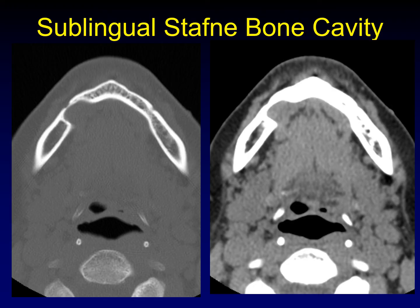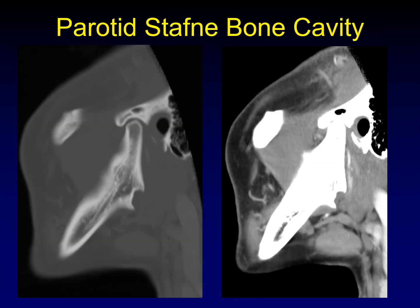Other salivary glands can produce similar defects, although they are much less common. Here's an example of a sublingual gland herniating into a well-corticated defect more anteriorly along the lingual surface of the mandible. Here's an example of the parotid gland doing the same thing — you can see here at the angle of the mandible a well-corticated defect that has been filled by herniated parotid gland.